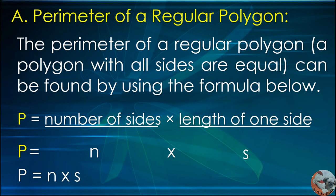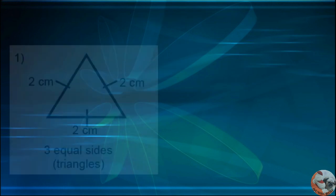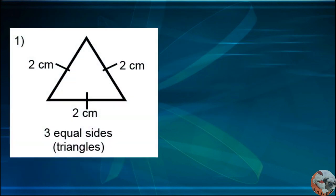Let's have an example. Given an equilateral triangle with three equal sides, find the perimeter. From the formula P equals N times S, P equals N, which is the number of sides. A triangle has three sides.